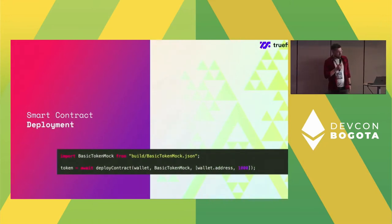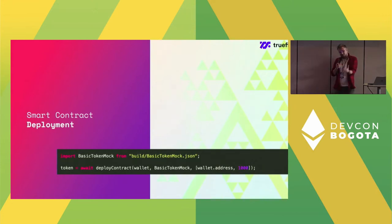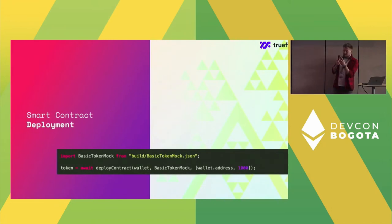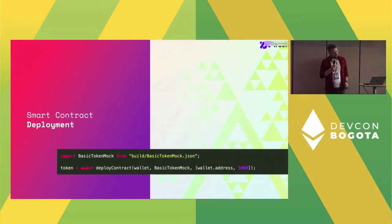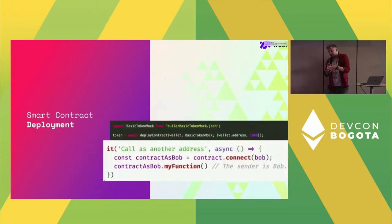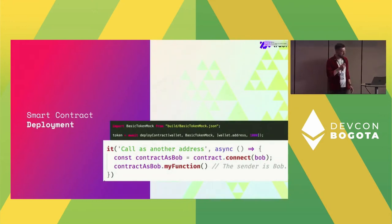Smart contract deployment itself is extremely simple. You import the artifact from the smart contract compilation, then use the deployContract function. The first argument is who is deploying, the second is what is being deployed, and the third is the constructor arguments. The token object created is tied to the wallet that deployed the contract, so whenever you interact with the token you're interacting from that wallet. You can change that by calling contract.connect to have a different wallet interact with the contract.